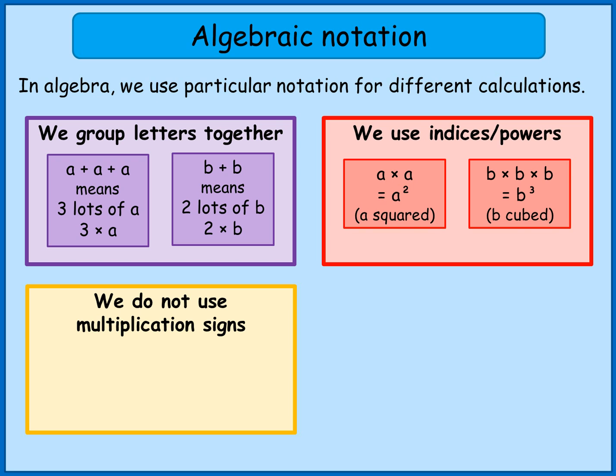So really what I've written there—three times a—I should have written as just 3a. You can see that this multiplication symbol here has just disappeared. So whenever I see 3a, I should understand that that actually means three times a or three lots of a.